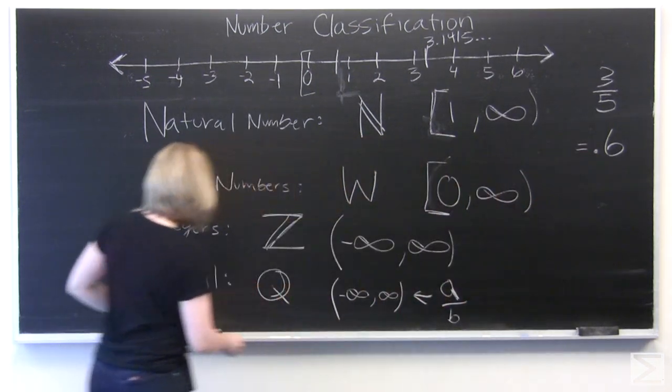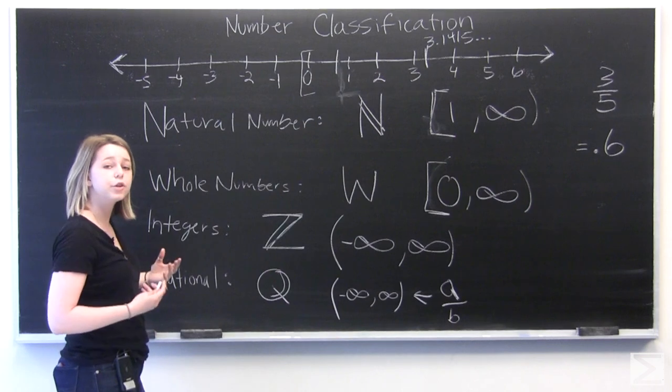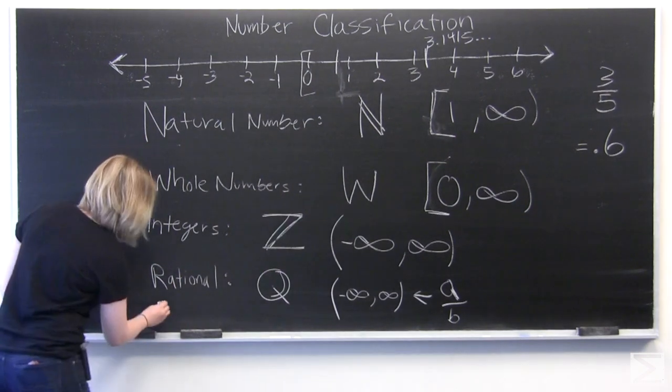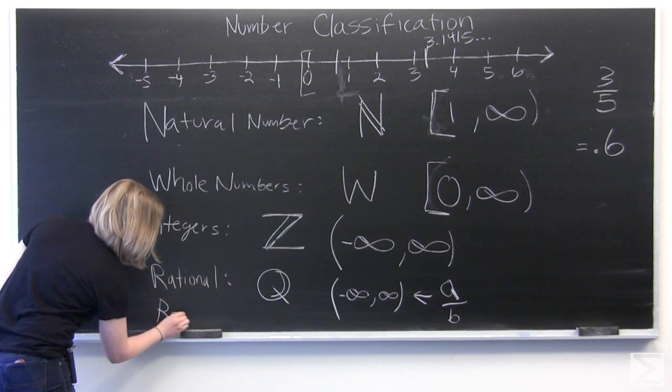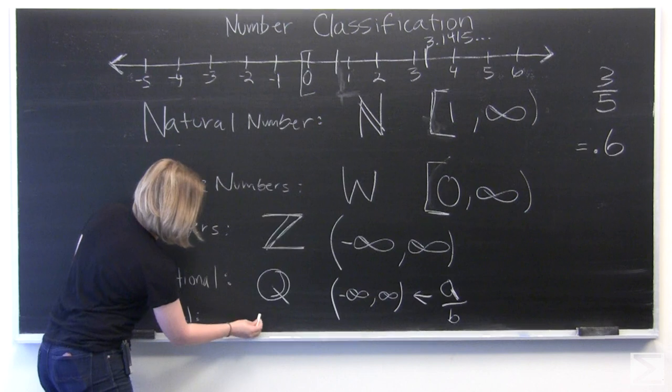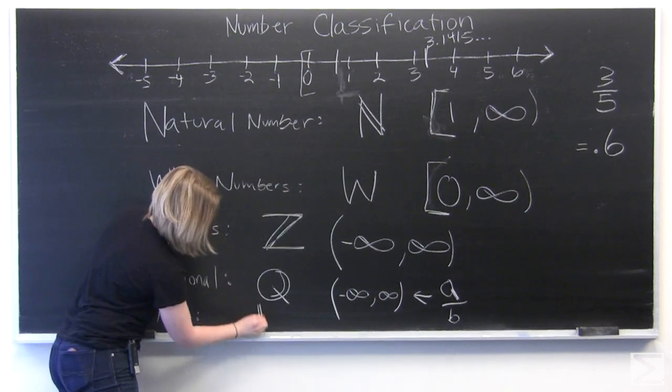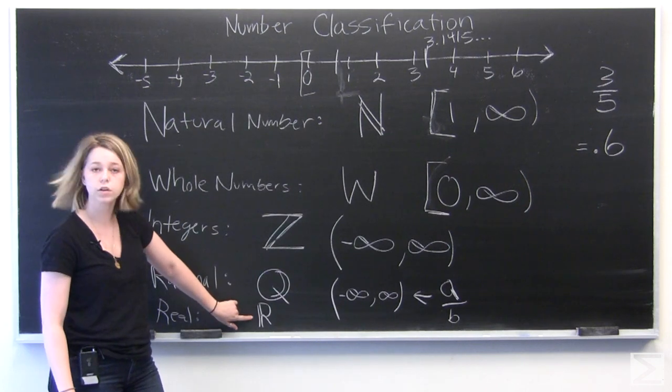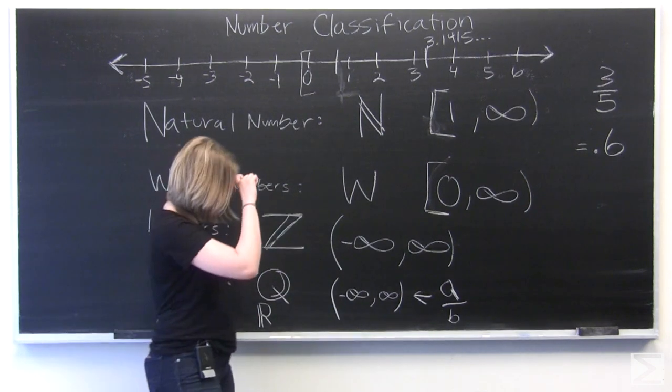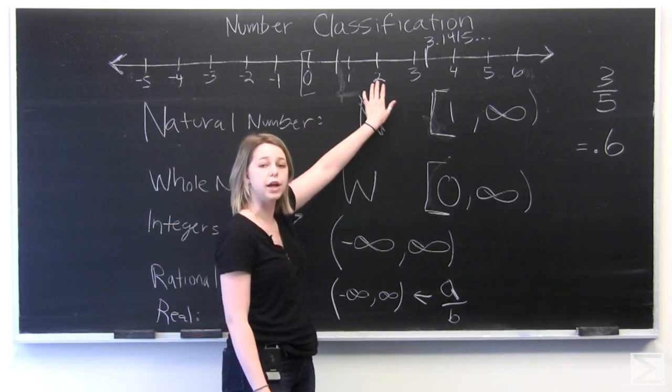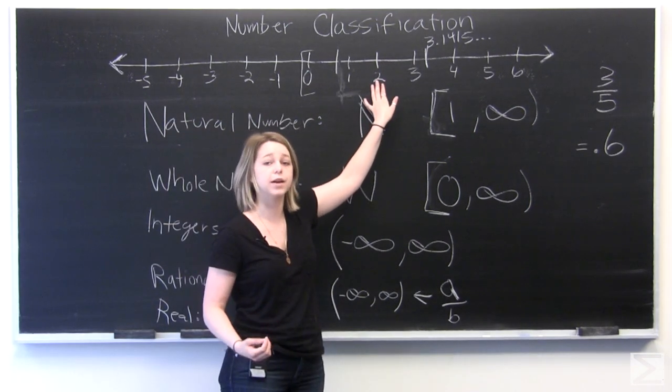So we call the group of numbers that includes irrational numbers as well as all of our other numbers, we call those real numbers. And so real numbers can be symbolized with an R with a double bar on the side here. And so real numbers are any number that have a place on the real number line from negative infinity to positive infinity.